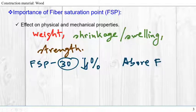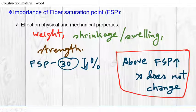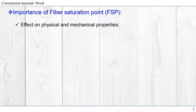Above the FSP, the mechanical or physical properties do not change. So if we know the fiber saturation point of a wood and the moisture content is below FSP and it's changing, then we can expect the wood to have experienced shrinkage and swelling, also change in strength and weight. Next we're going to solve problems using FSP, but till then, thank you.